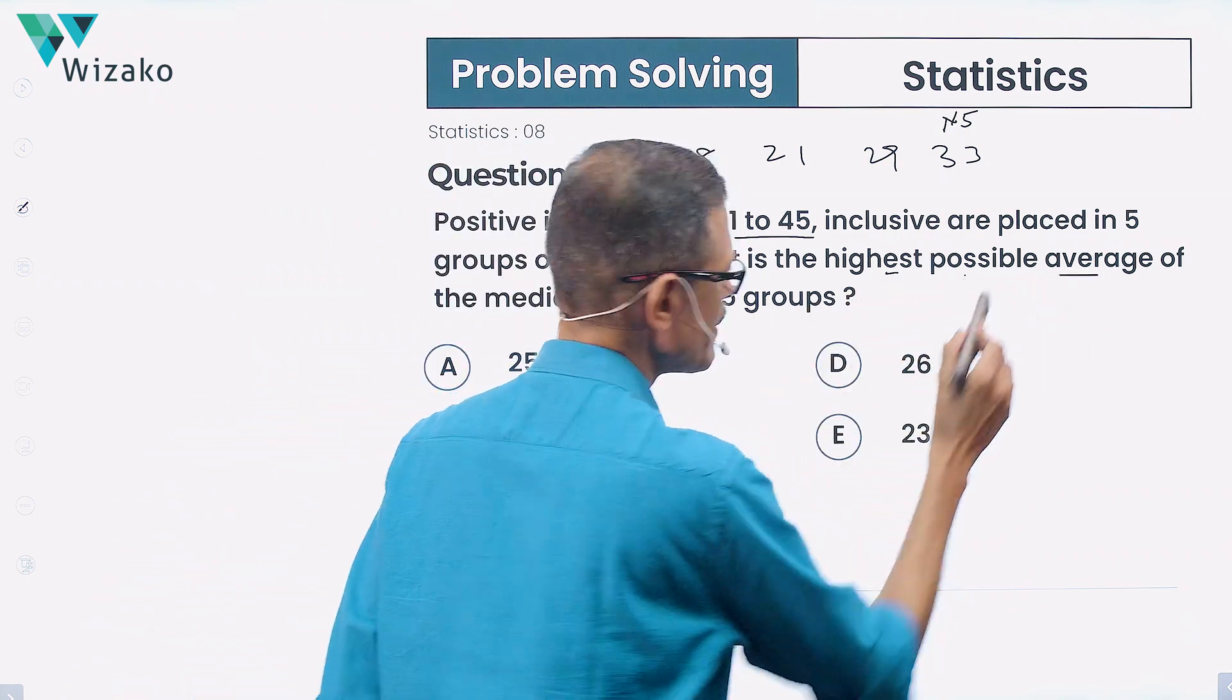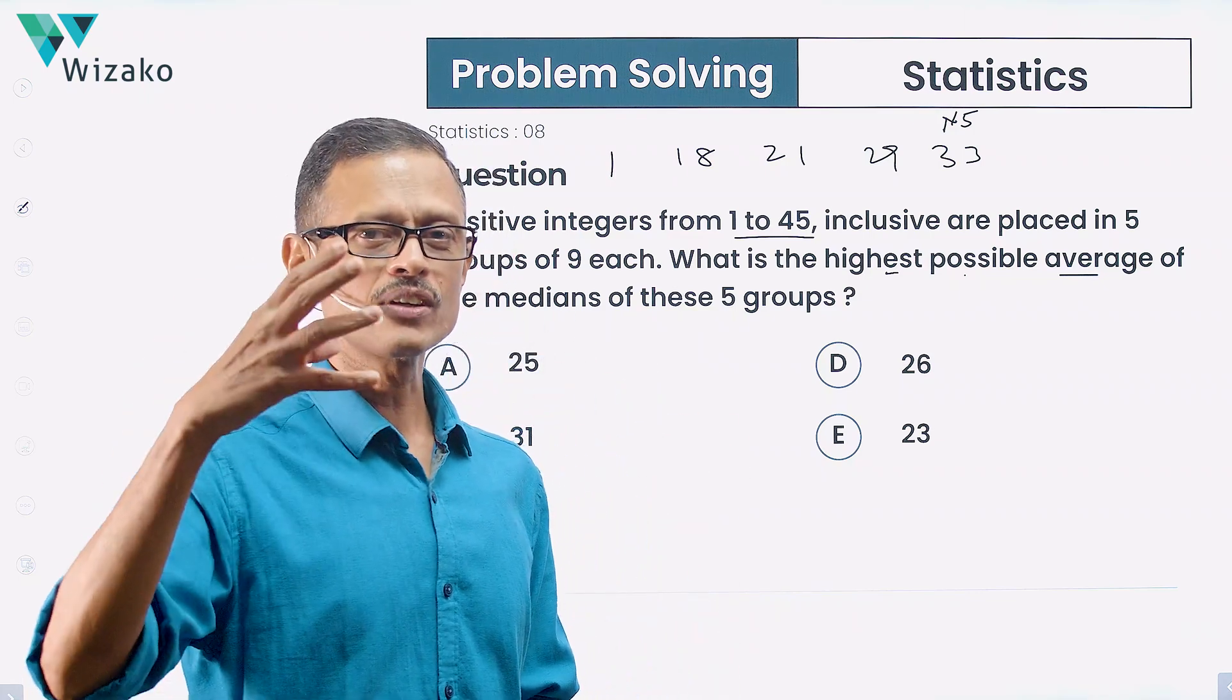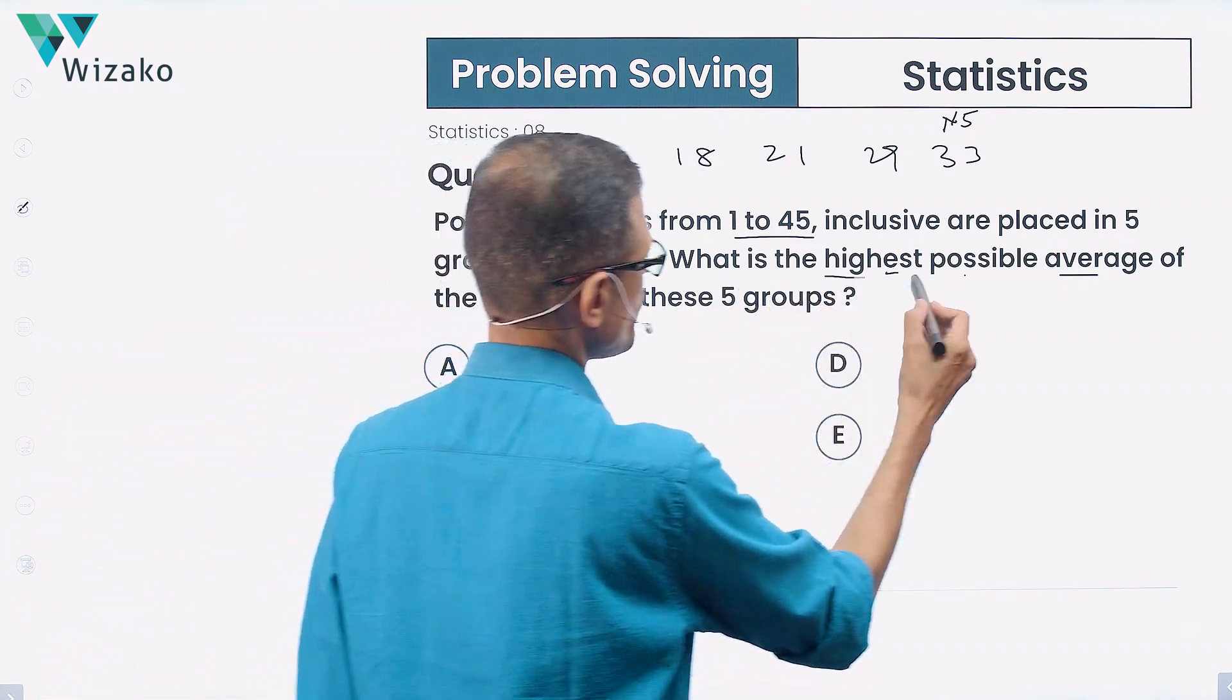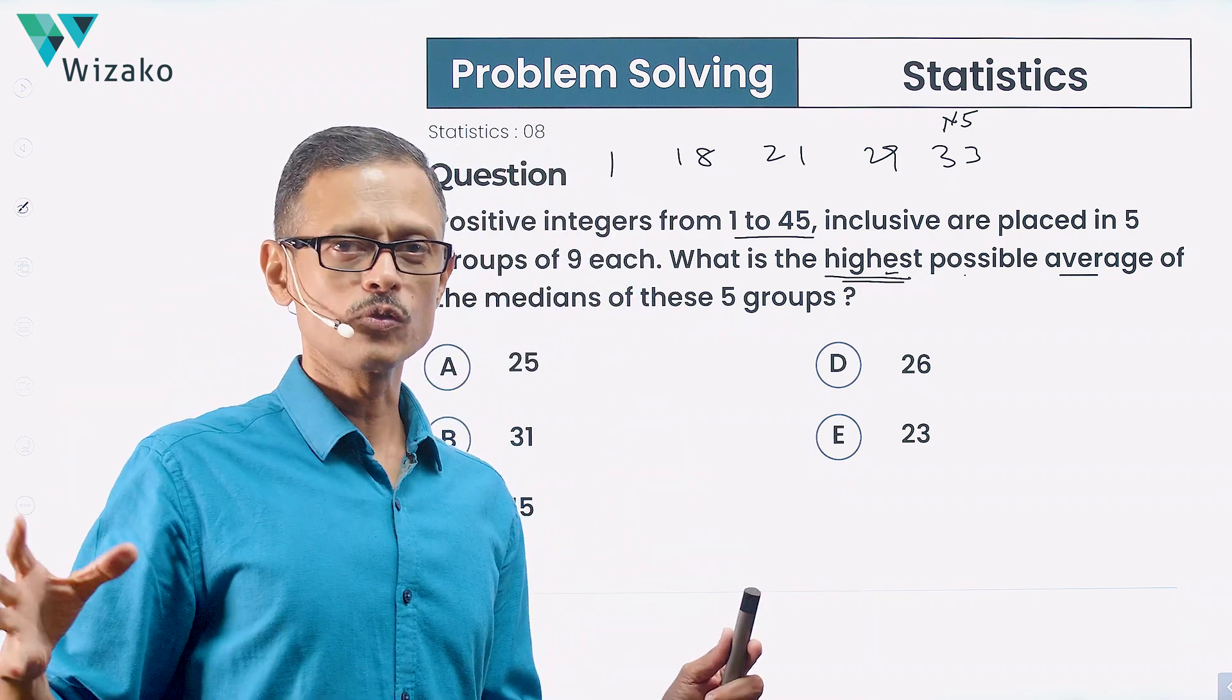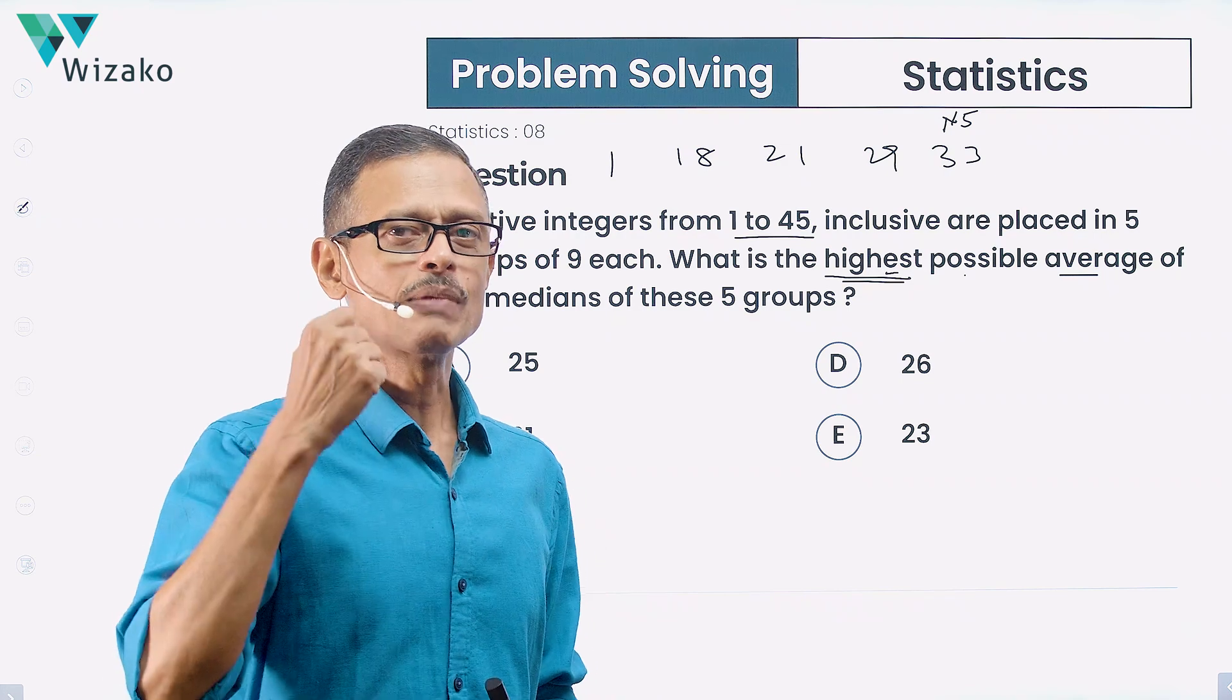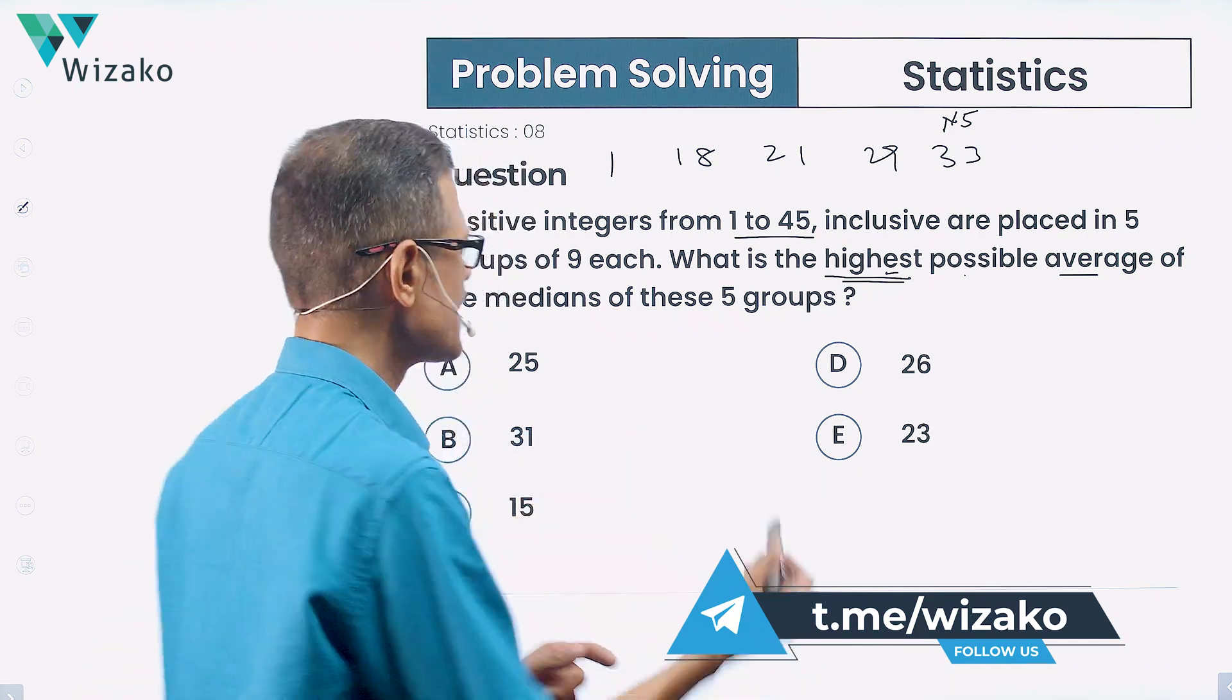We're trying to find out the average of the medians. So you pick the median for group 1, group 2, group 3, group 4, group 5, and find out the average. We're not finding out the average for some randomly distributed group. We want to find the average such that we are able to get the highest possible average. How high can the average of the medians of these 5 groups be? You are given complete freedom to distribute these 45 numbers into 9 numbers each in 5 groups. Find out what way, if you distribute, will you get the highest possible average.